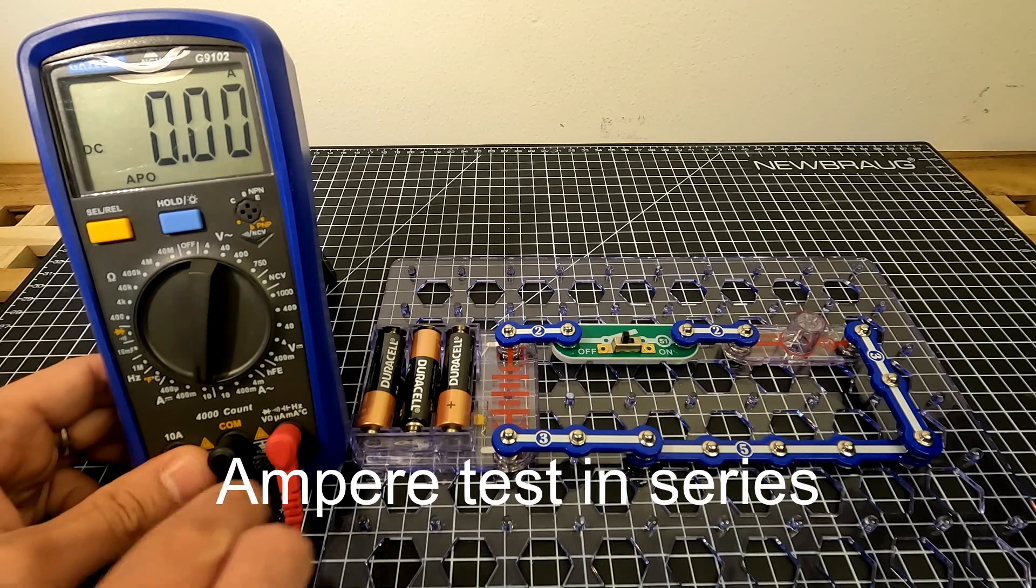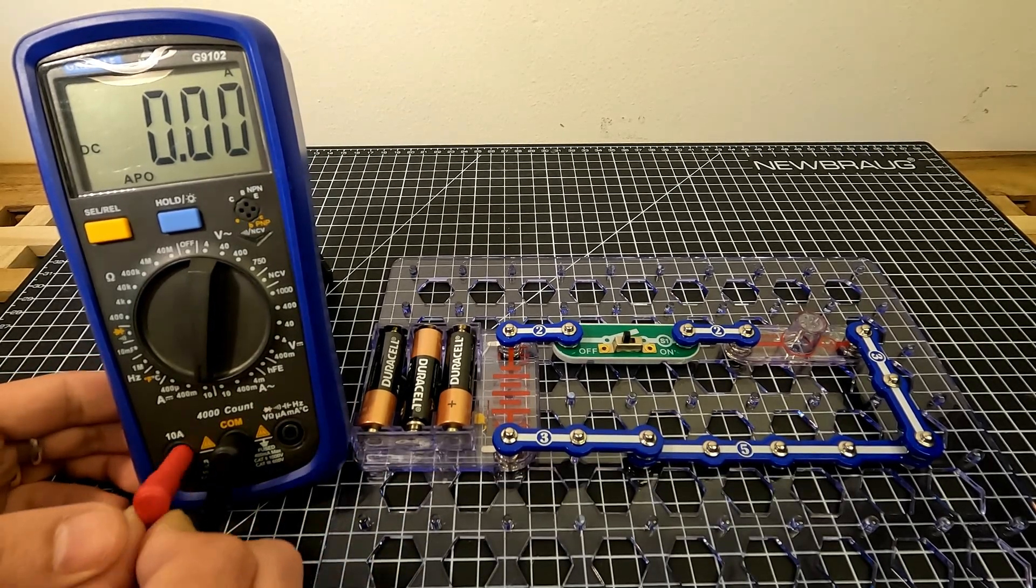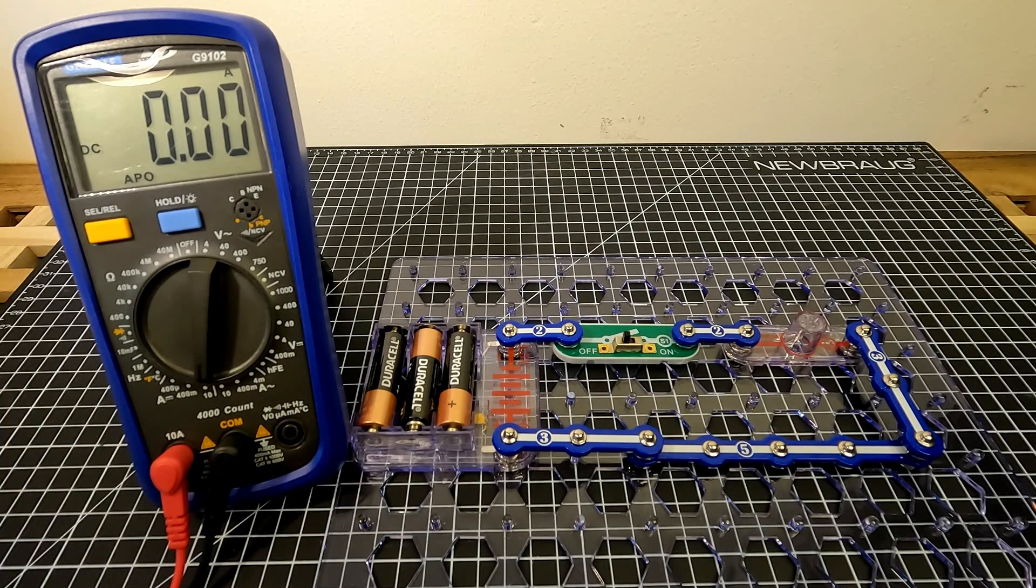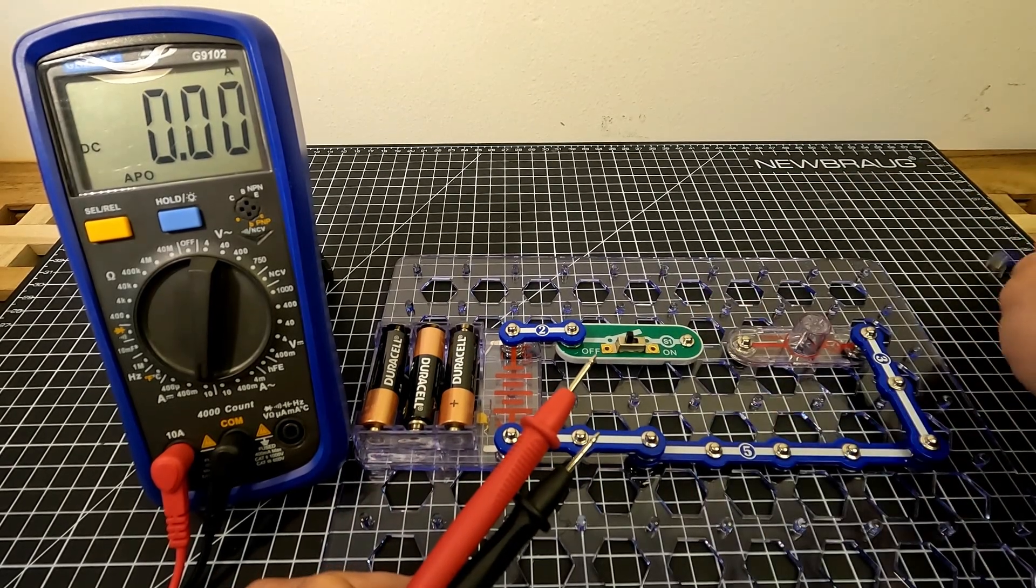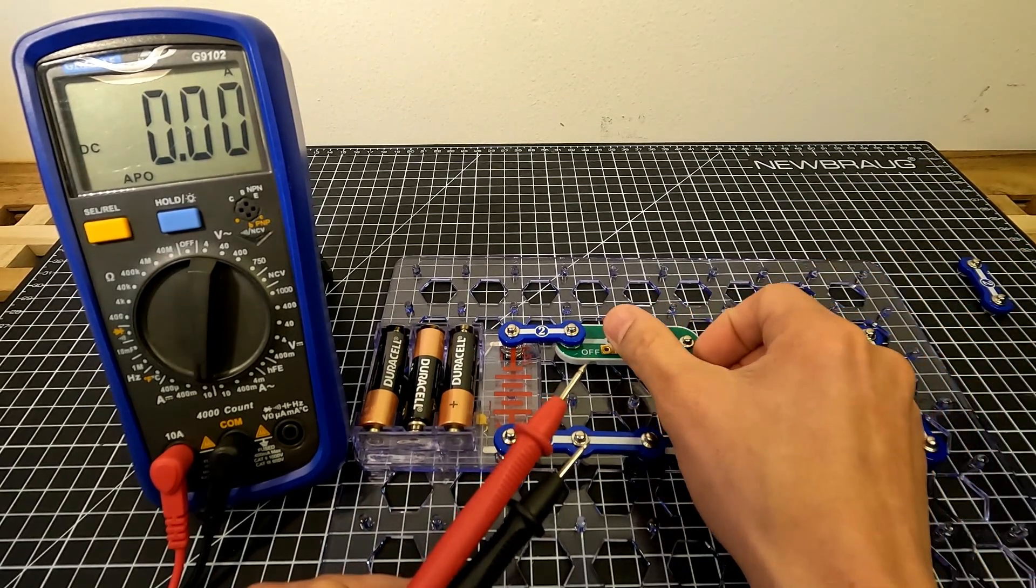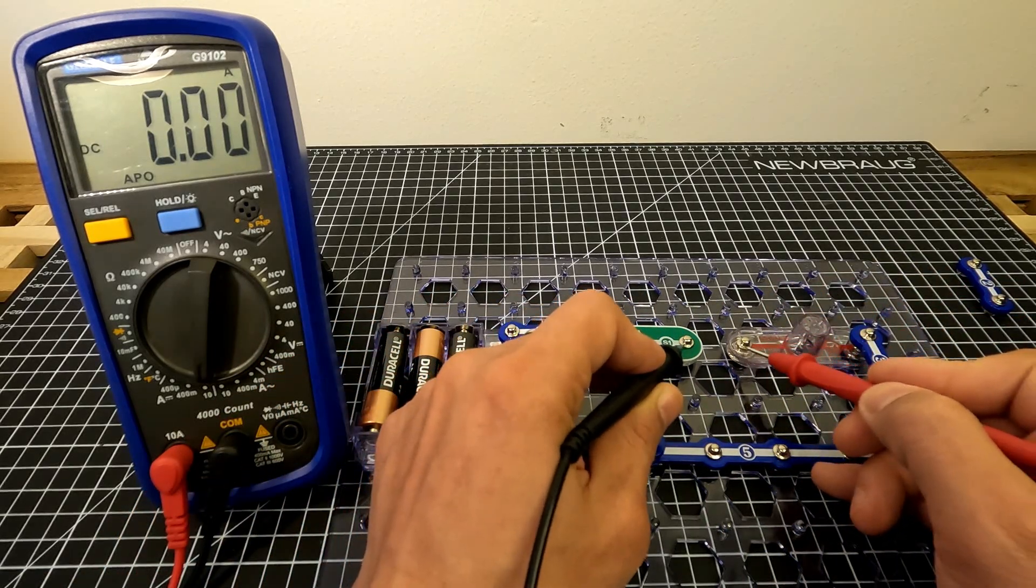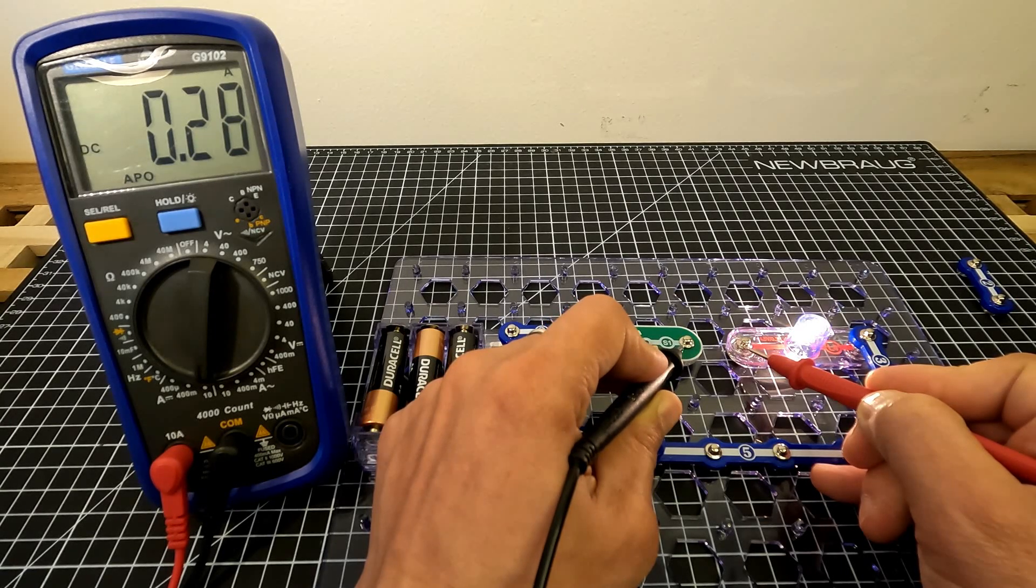Ampere. Move the red probe right here, and then open the line on the switch and connect your probes. 0.28, right there. How many? 0.28 ampere.